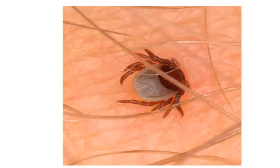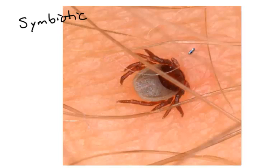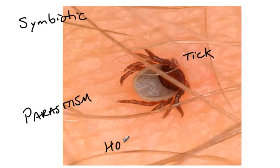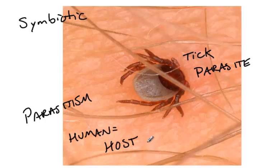Now we're going to talk about symbiotic relationships — those very close relationships between two different species. This image shows a tick on a human, which is an example of parasitism. The human is the host, which is where the tick is living, and the tick is the parasite. In parasitism, one species is harmed while one is helped. In all cases of parasitism, the host is harmed — in this case the human — and the parasite is helped.